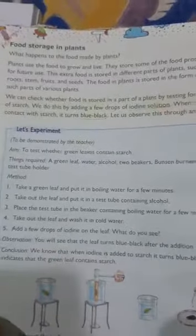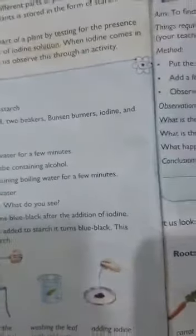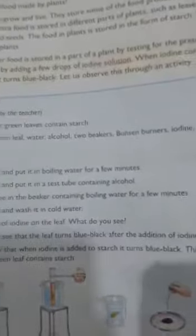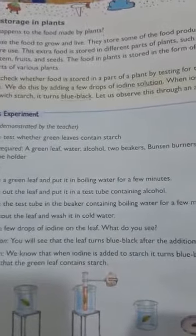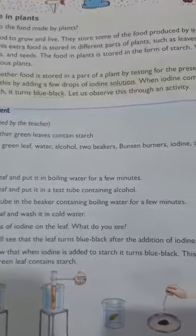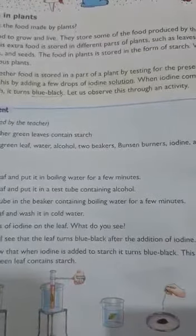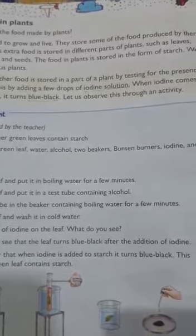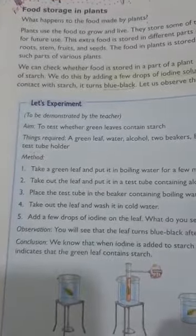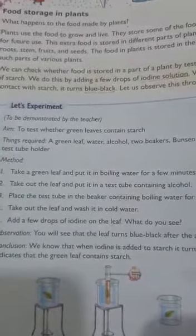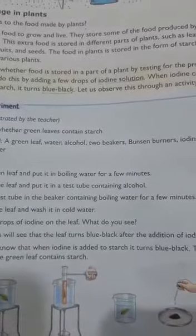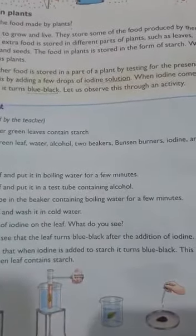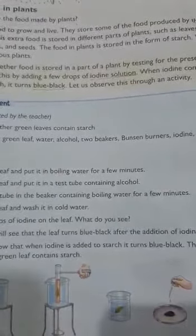What happens to the food made by plants? As we learned earlier, during photosynthesis plants prepare food. As the plants need food to grow and live, they store some of the food for future use. This extra food is stored in different parts of a plant — in leaves, roots, stem, fruits, and seeds. These are the parts where plants store food.